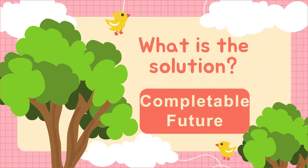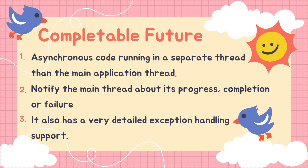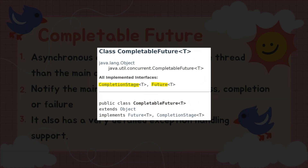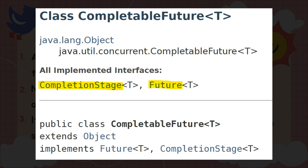The solution to all these problems is CompletableFuture. Using CompletableFuture we will be able to overcome all these limitations. CompletableFuture is used for asynchronous programming — the logic runs in non-blocking mode by running a task on a separate thread other than the main application thread. It also notifies the main thread about its progress, completion, or any failure, and it has very detailed exception handling support. CompletableFuture implements both the Future and CompletionStage interfaces, and provides many utility methods for creating, chaining, and combining multiple futures.